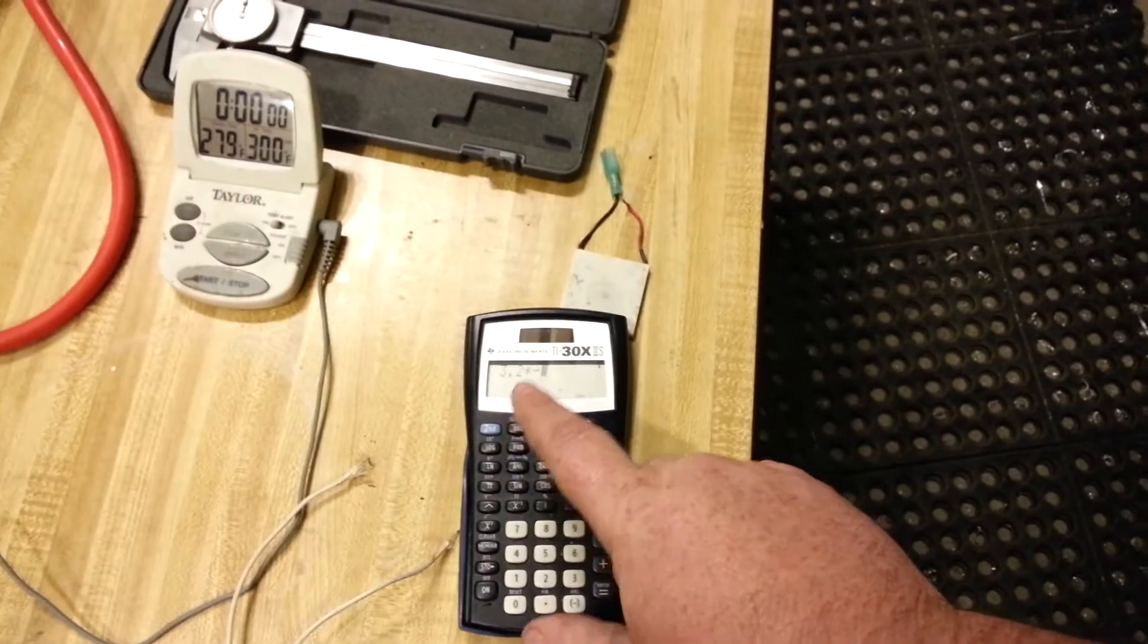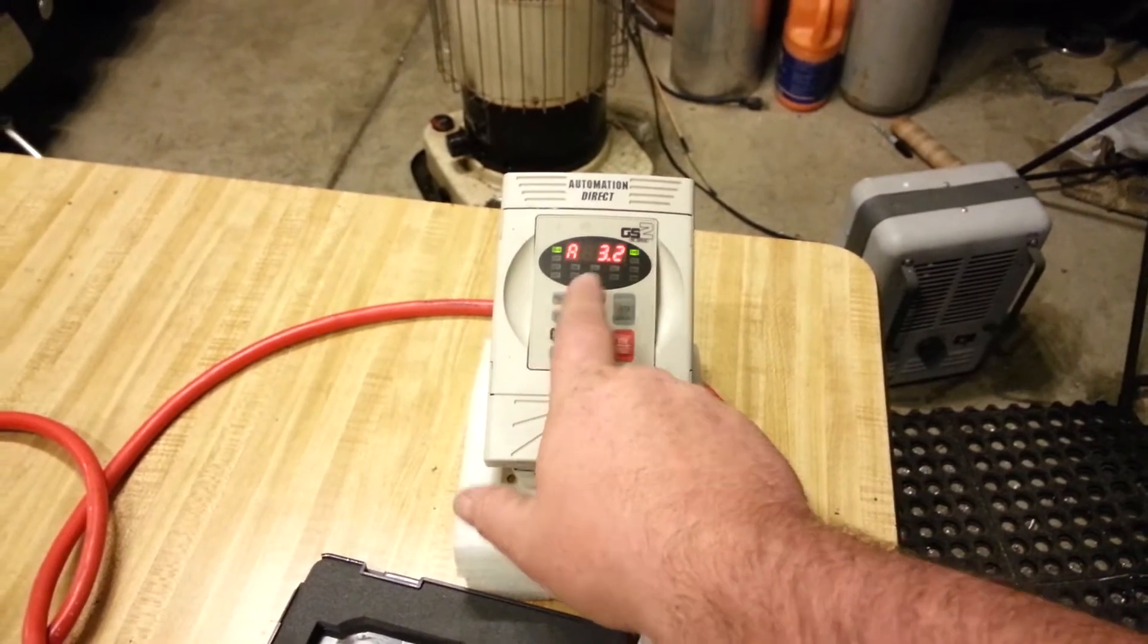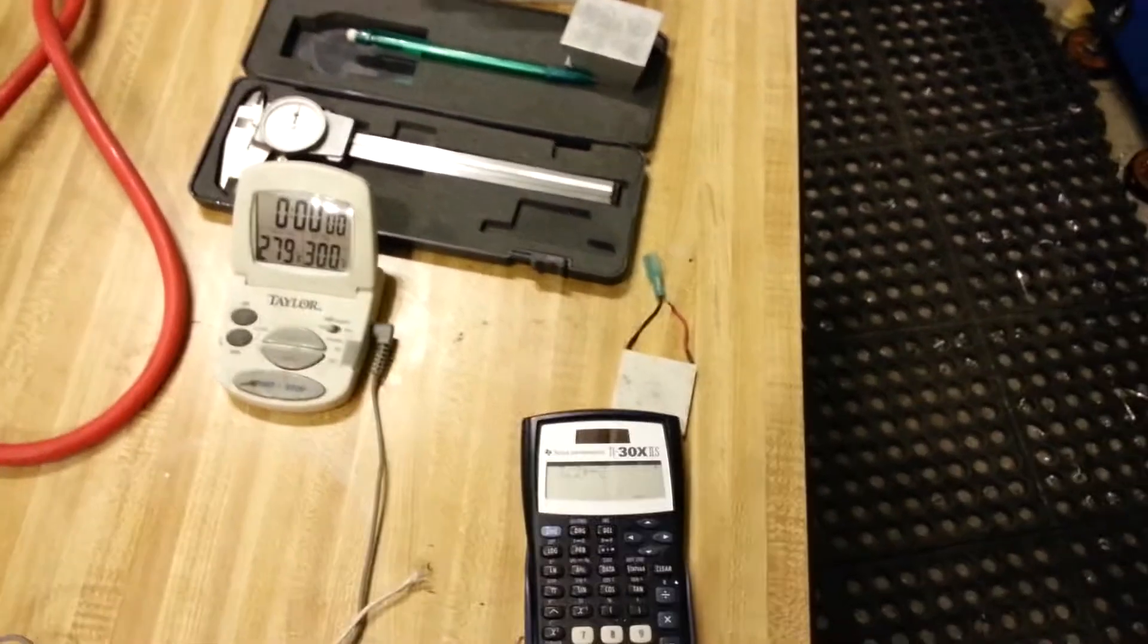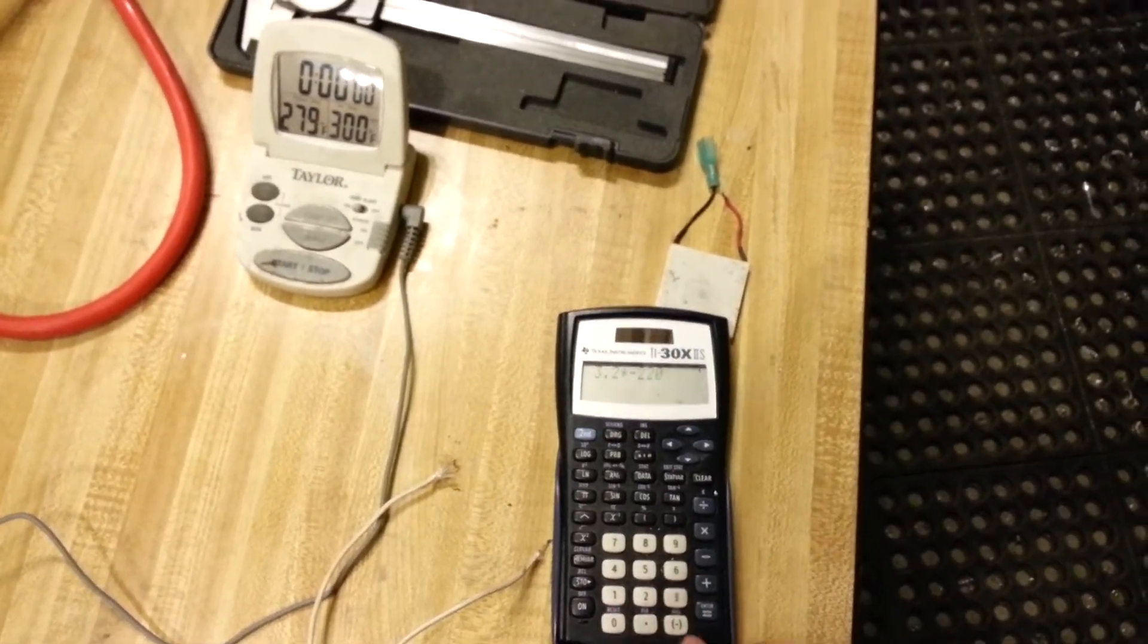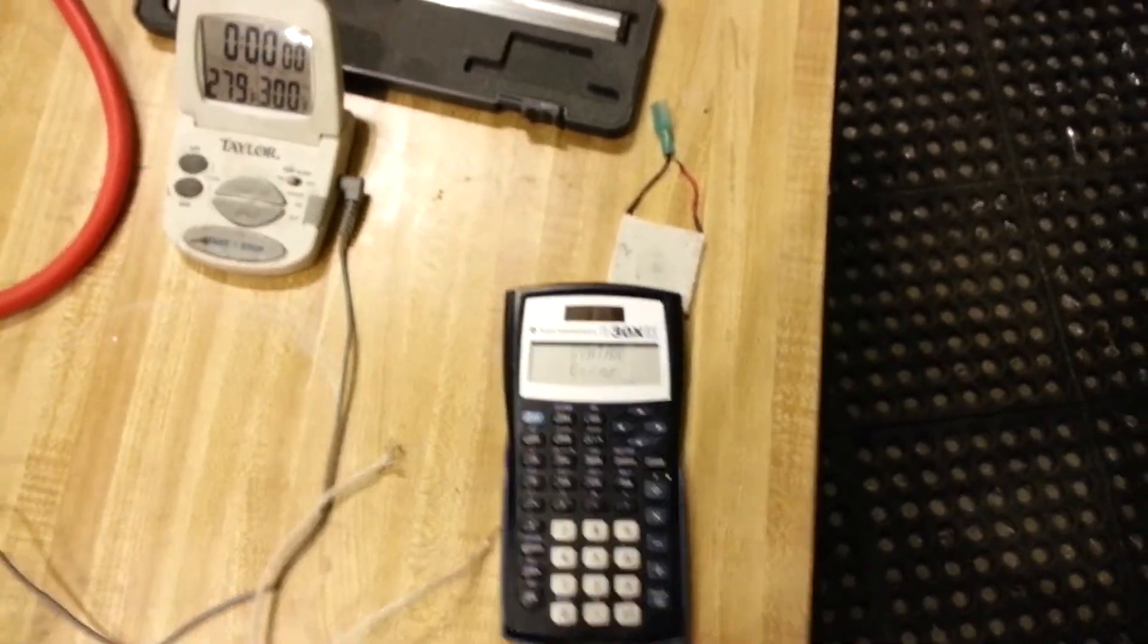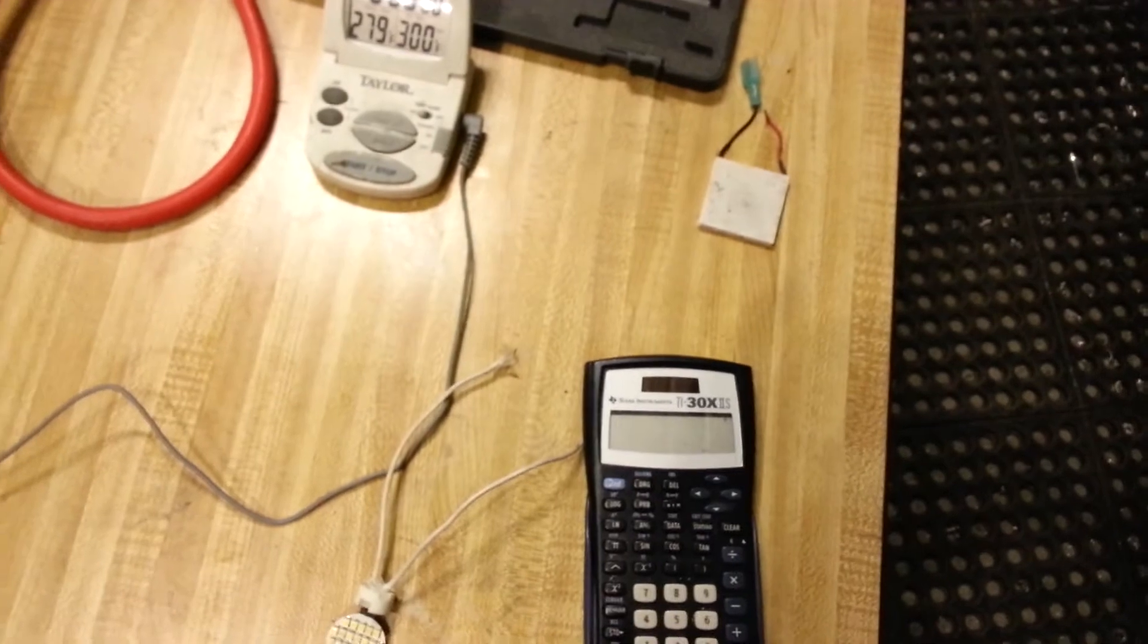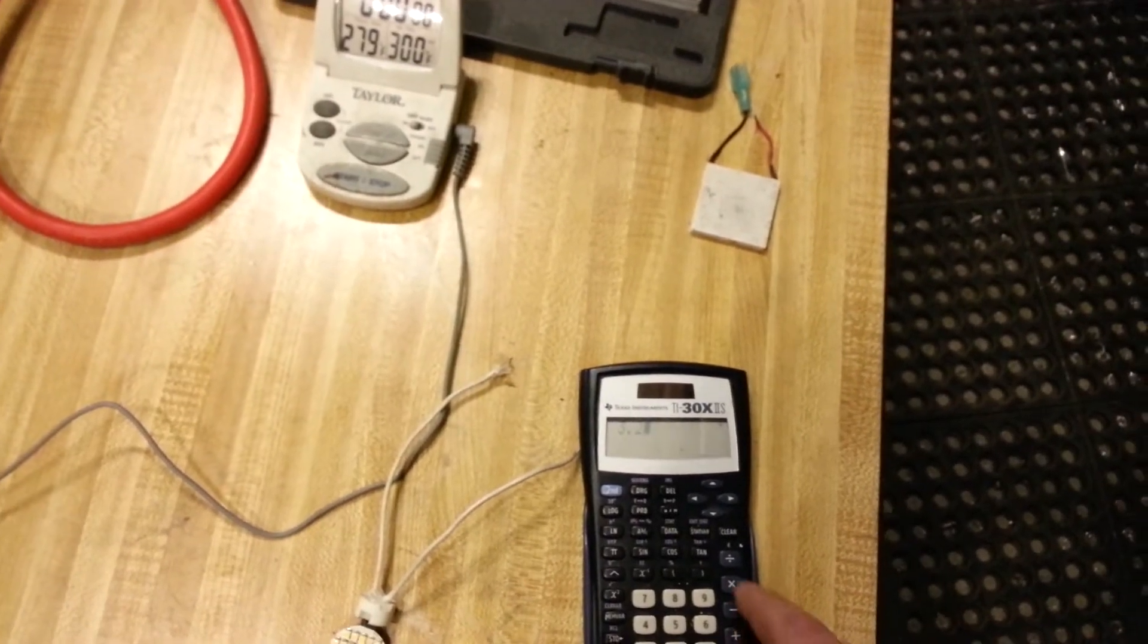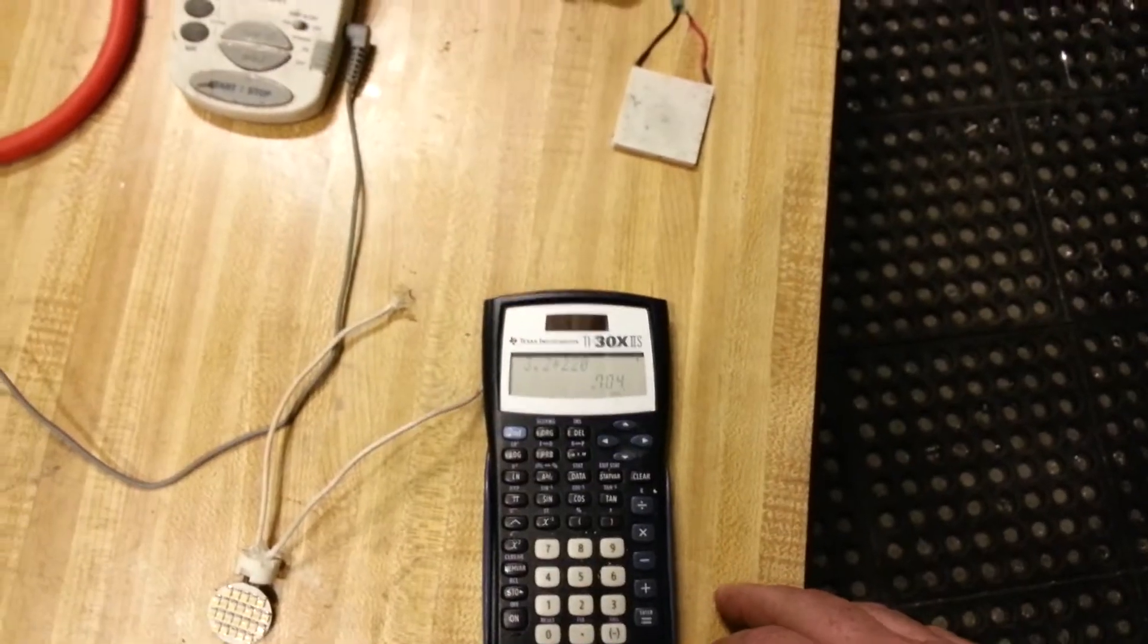So 3.2 amps. I'll just confirm that, 3.2, 3.1. So 3.2 times the voltage, which is 220 volts. This thing is getting messed up. So 3.2 times 220, around 700 watts input.